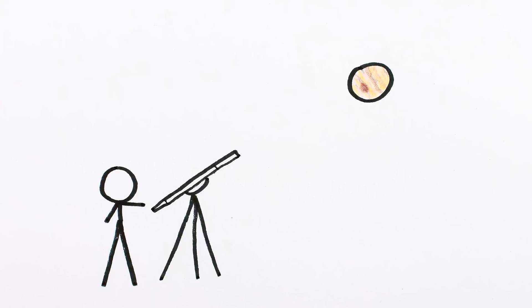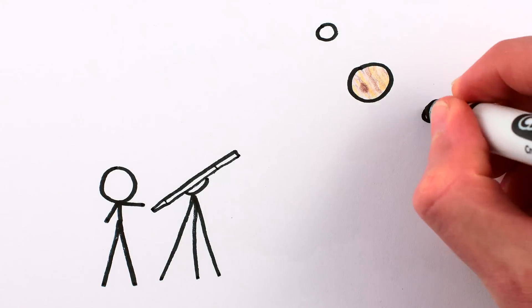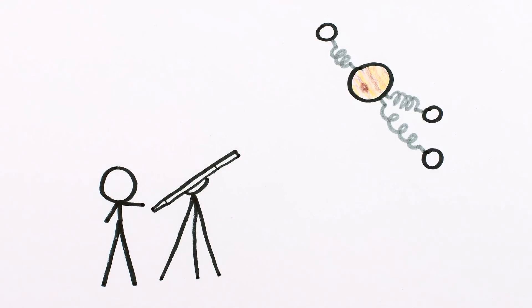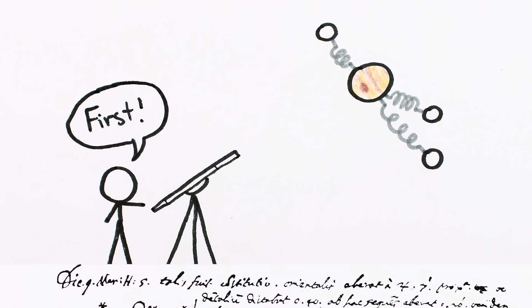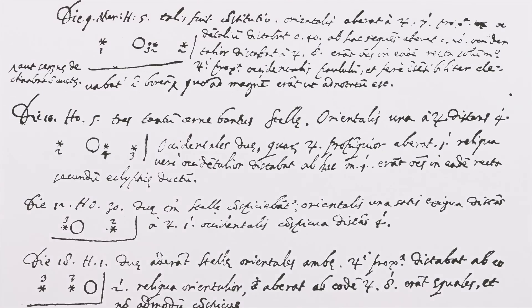When Galileo pointed his telescope at Jupiter in 1610, he was the first person to see the giant orbs attached to it by springs. His actual drawings compared night after night show these bright spots moving back and forth past Jupiter, exactly the same as if they were balls hanging off of springs.